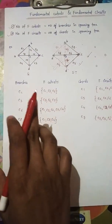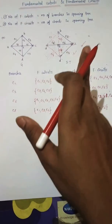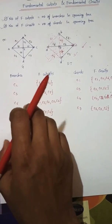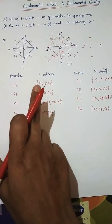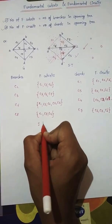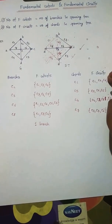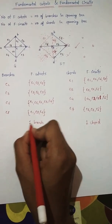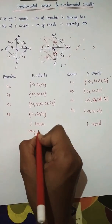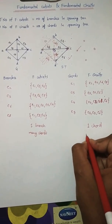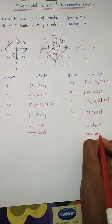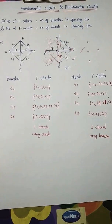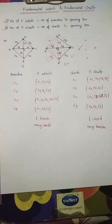To summarize: the number of branches equals the number of fundamental cut sets, and the number of chords equals the number of fundamental circuits. For fundamental cut sets the basic principle is one branch and many chords; for fundamental circuits the basic principle is one chord and many branches. With these principles you can directly solve any given question — it's straightforward. Thank you.